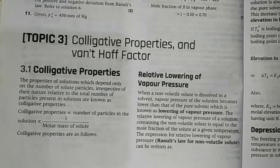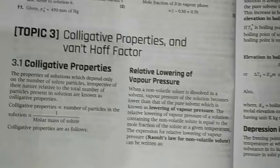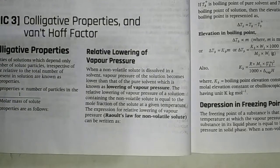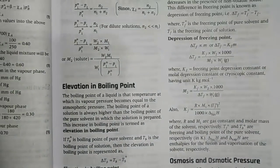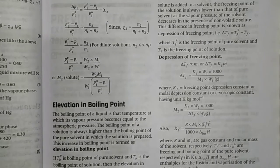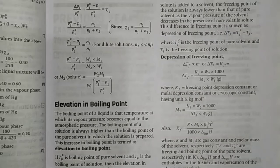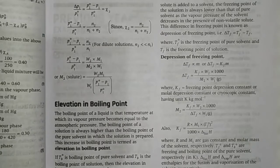In the class 12 syllabus there are four colligative properties. The first one is relative lowering of vapor pressure. The derivation of this property gives us the formula: P naught 1 minus P 1 upon P naught 1 equals W 2 upon M 2 into M 1 upon W 1. By this formula we calculate the molar mass of the solute.